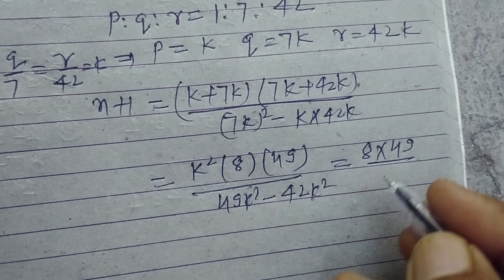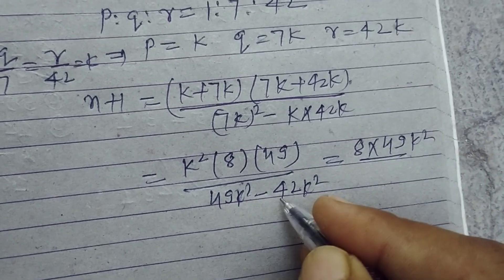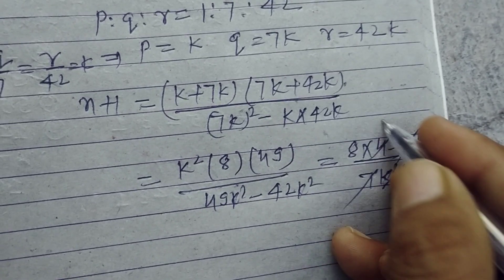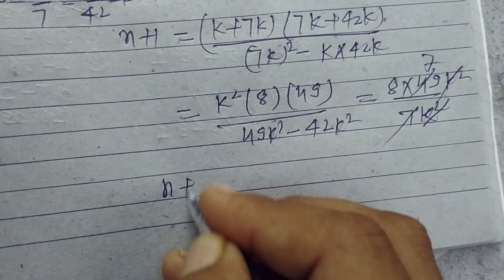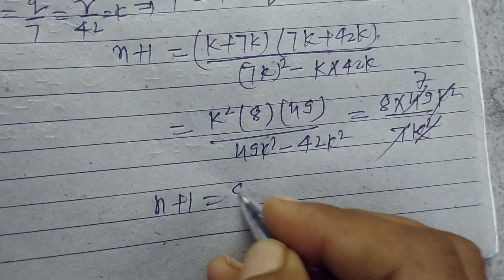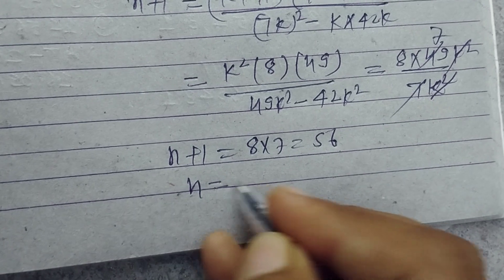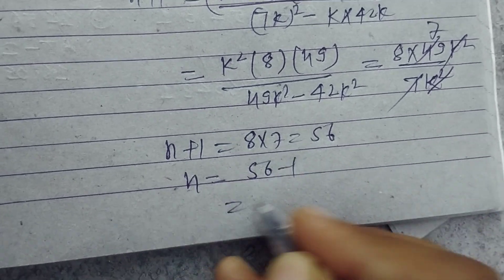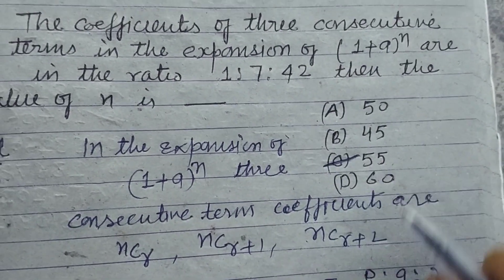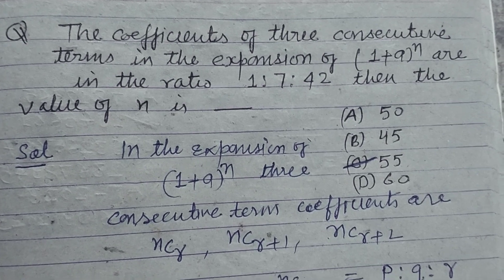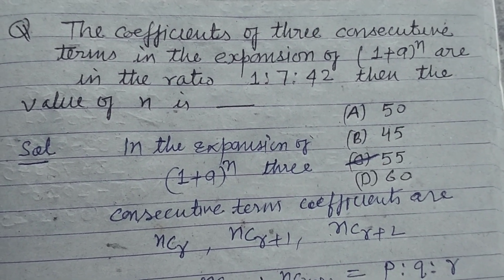Then 49 minus 42 equals 7, so we have 7K squared in the denominator. This gives N plus 1 equal to 8 times 7, which is 56. So N equals 56 minus 1, which is 55. The value of n is 55, found in option C. Therefore option C is correct. I hope you got it — please like the video, subscribe the channel, thanks for watching.